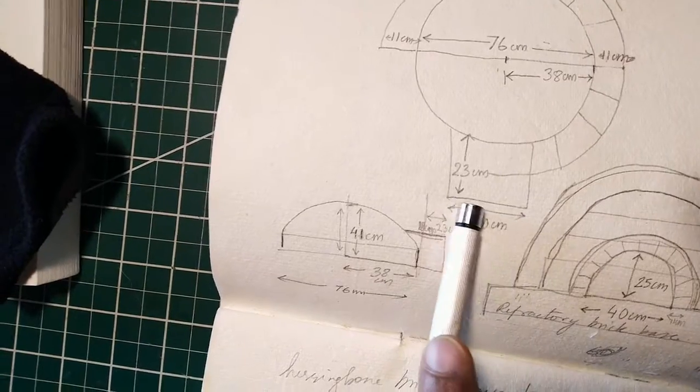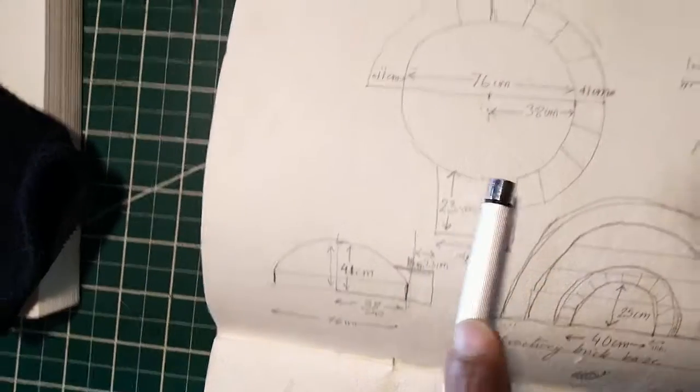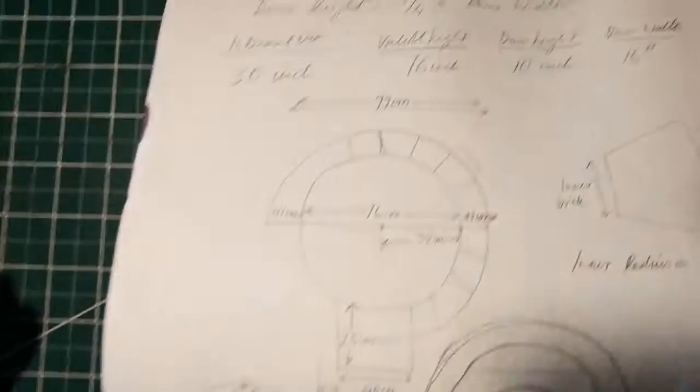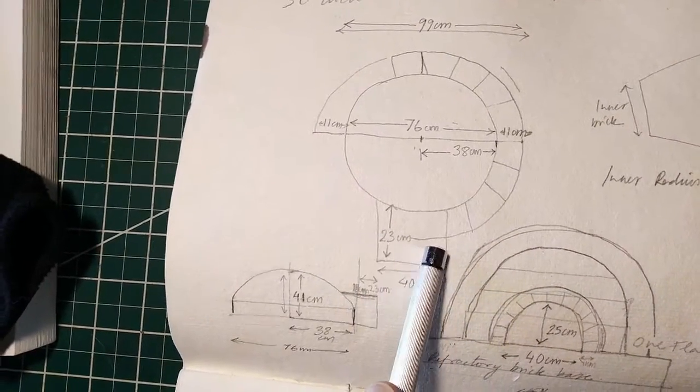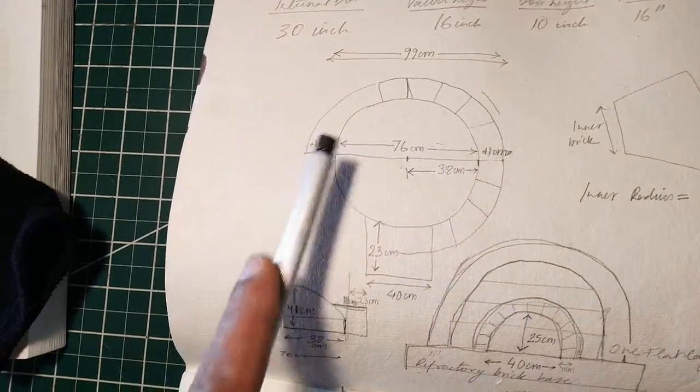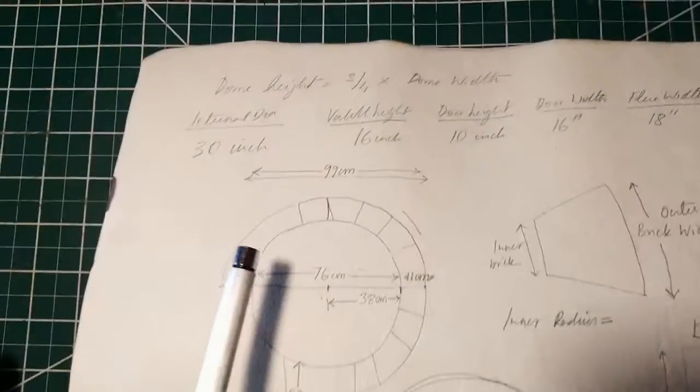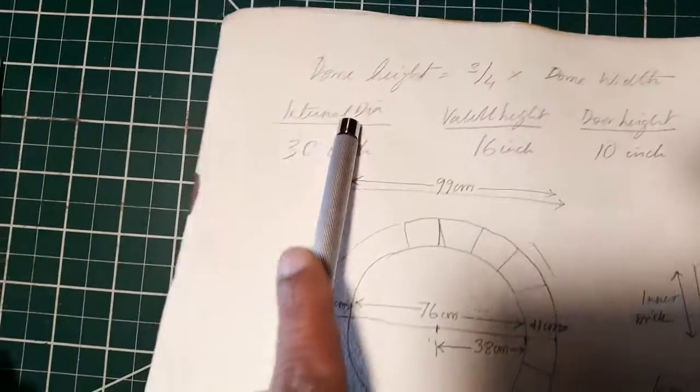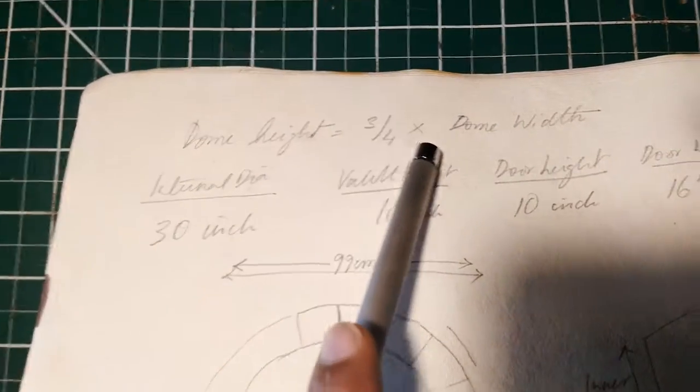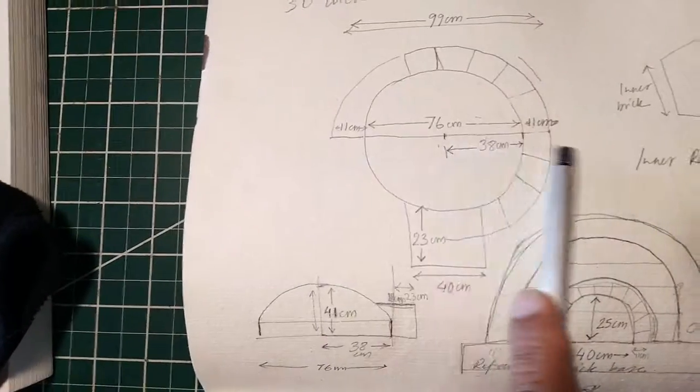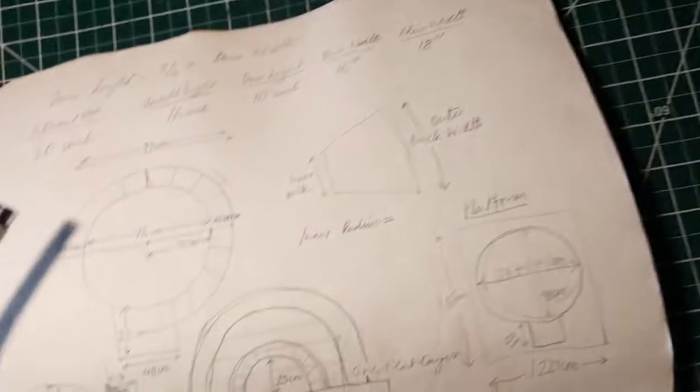I'll post the link to the Wikipedia page which will tell you the exact ratio for this to this in order to achieve the correct airflow and heating considerations. The dome height should be three-fourths of the dome width. Whatever the width of your dome is, the height needs to be three-fourths of that.